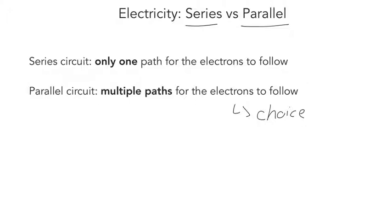In industrial settings — and I mean industrial settings as anything on a large scale, so for example a house — houses are usually wired with parallel circuits in mind. The reason why is simply because if there is a break in one of the paths, the entire circuit doesn't fail, so the electrons can still make their way throughout the circuit.